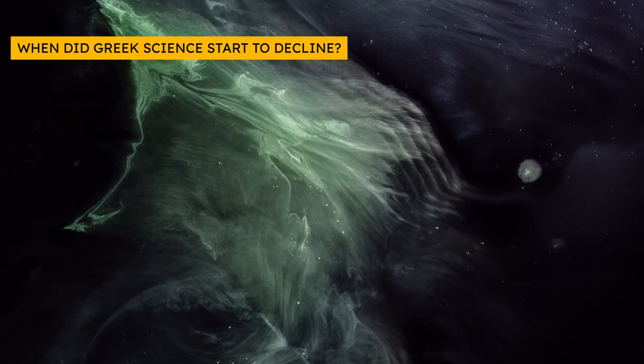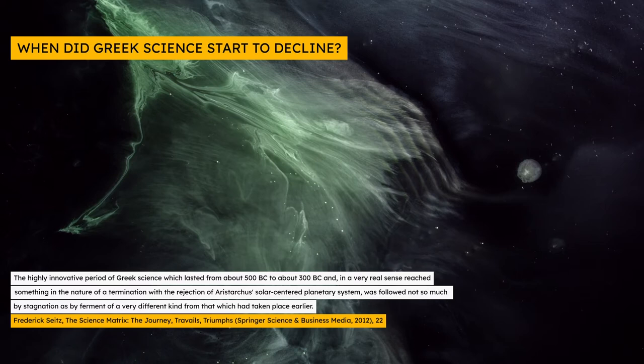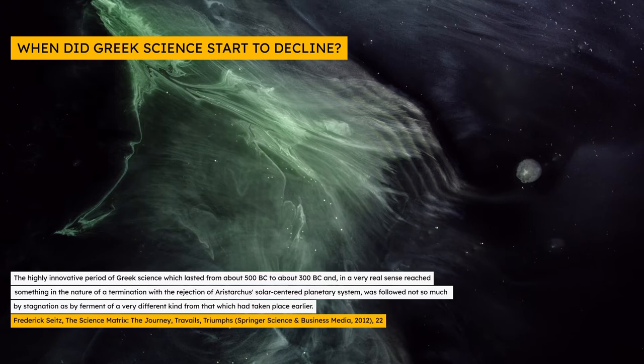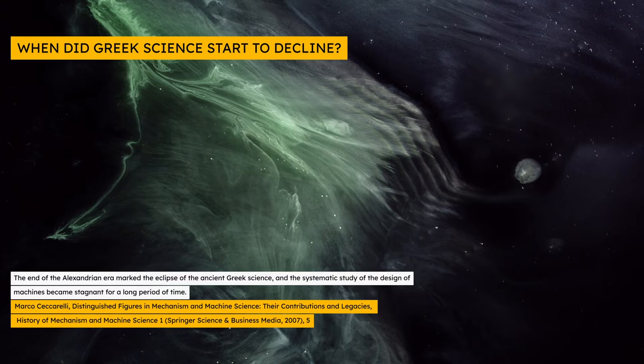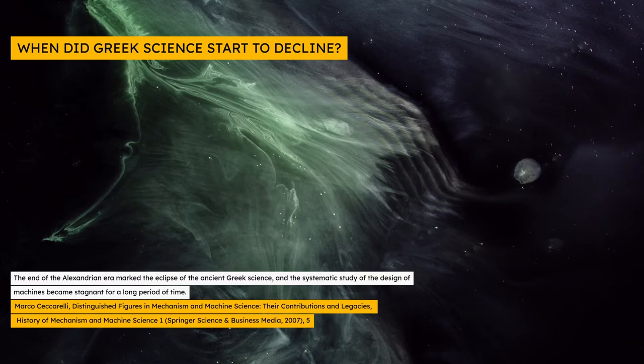Writing in 2012, physicist Frederick Seitz observed that the innovative period of Greek science reached something in the nature of a termination with the rejection of Aristarchus' solar-centered planetary system, dating the start of the decline from 300 BCE. Dr. Marco Ceccarelli likewise dated what he called the eclipse of ancient Greek science to the Alexandrian era of the 4th century BCE.